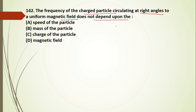When a charged particle moves in a magnetic field, there is a centripetal force needed. We can write the centripetal force as mRω² or mv²/r, which equals the magnetic force qVB·sinθ. With θ = 90°, the velocity terms cancel.